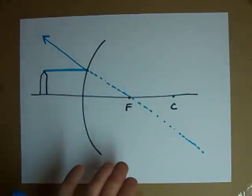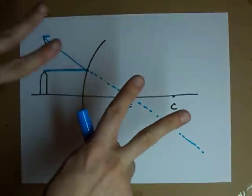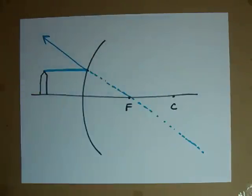Light can't go through a mirror. So this line here goes through F, even though it doesn't actually go through F.